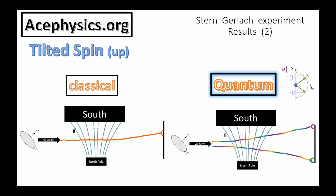This suggests that the particles enter the magnetic field in a superposition of spin-up and spin-down states, with the measurement at the screen collapsing the wave function and determining the final position. For a spin prepared in a tilted-upward state, there would be a higher probability to measure it at the top of the screen, and we are going to work out that calculation shortly.